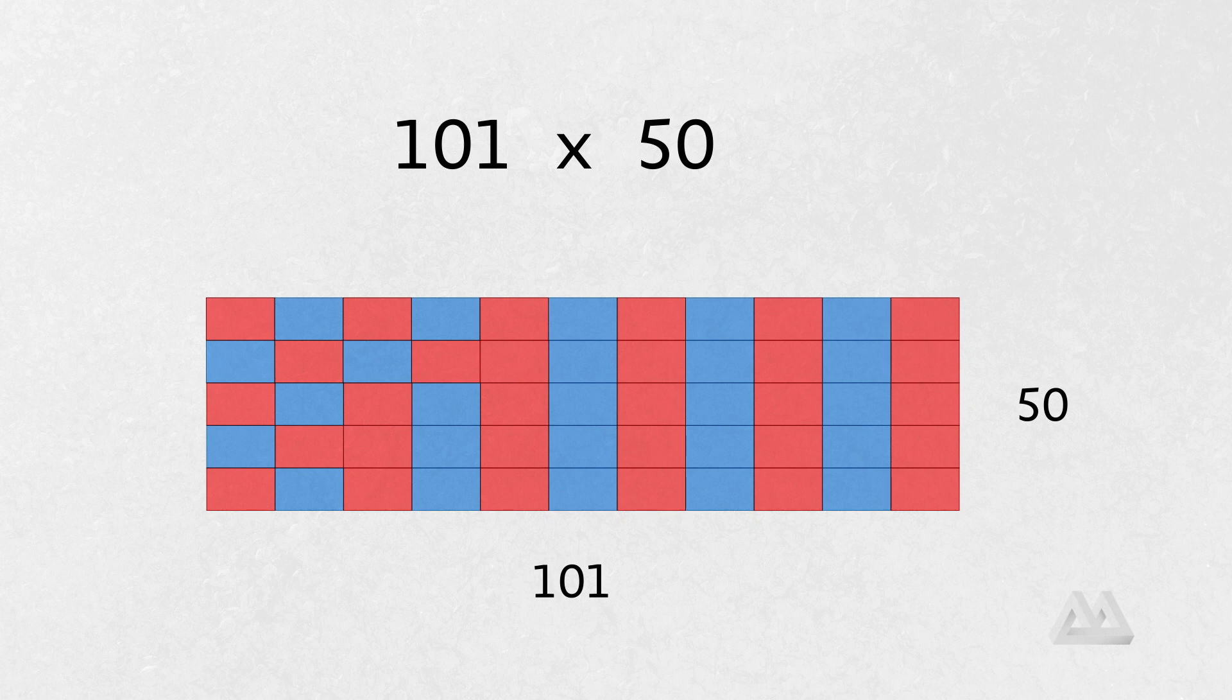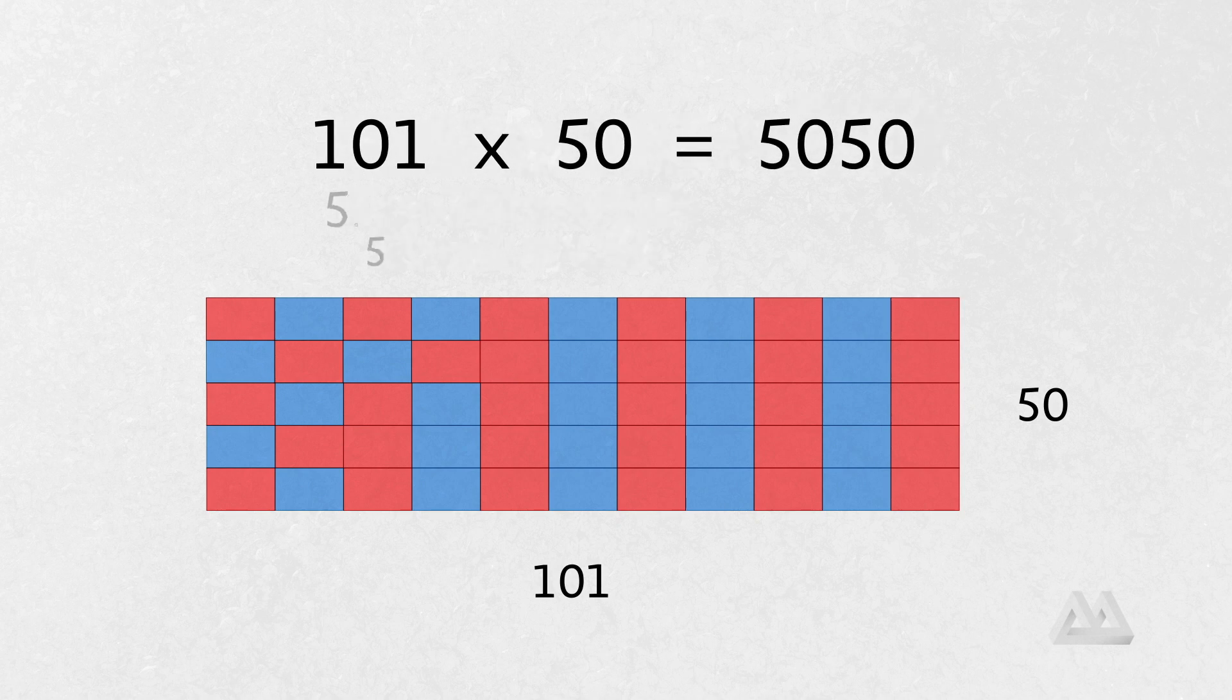And now we can multiply 101 times 50 because we'll have 50 rows of 101. And that's something we can do on paper very easily. We could probably do it mentally as well. Let's do it mentally. How much is 50 hundreds? 50 hundreds is 5,000. And how much is 50 ones? That's 50. So, the answer should be 5,050. And that's the sum of the numbers from 1 to 100. And that's probably how Gauss did it.